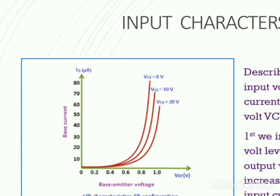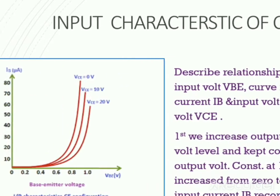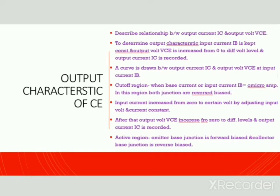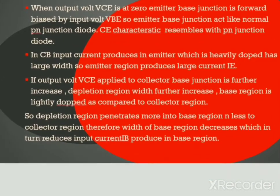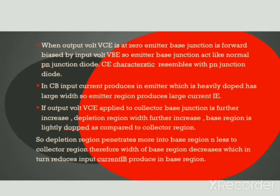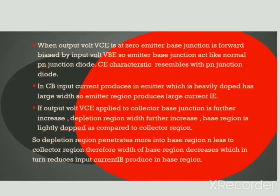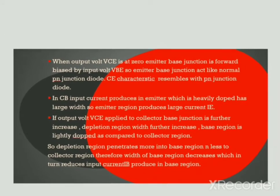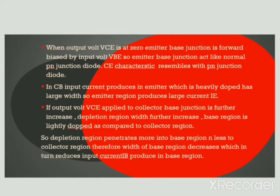The output voltage VCE is kept constant and this process is repeated. When output voltage VCE is zero, the emitter-base junction is forward biased by the input voltage VBE. The input characteristic is the same as that of a normal PN junction diode. Since it is a silicon transistor, input current IB increases rapidly with input voltage. The input current produced is small as compared to CB configuration.